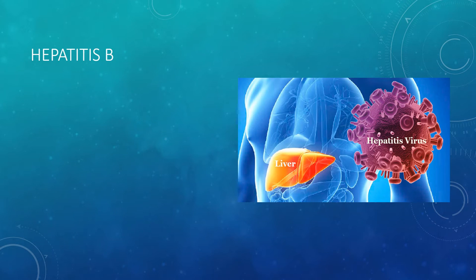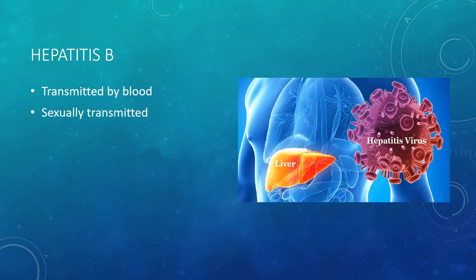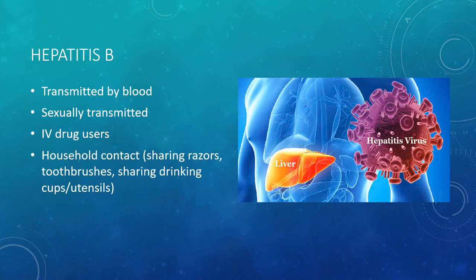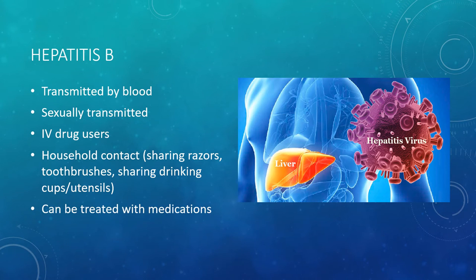Hepatitis B can be transmitted by blood, sexually transmitted, transmitted through IV drug users, through household contact such as sharing razors, toothbrushes, sharing drinking cups and utensils. It can be treated with medications, and vaccines are available for Hepatitis B.